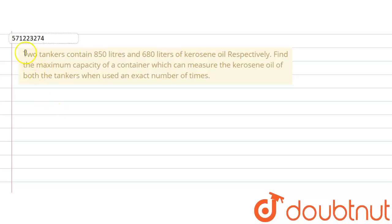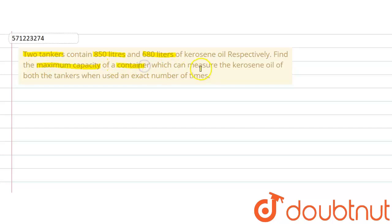The given question says that two tankers contain 850 liters and 680 liters of kerosene oil respectively. Find the maximum capacity of a container which can measure the kerosene oil of both the containers when used an exact number of times.